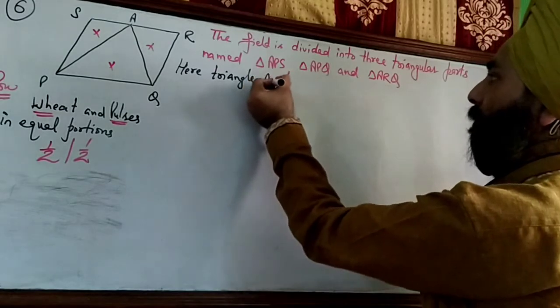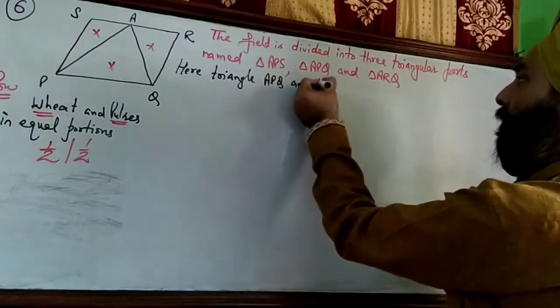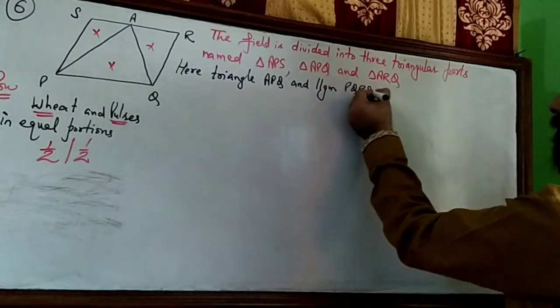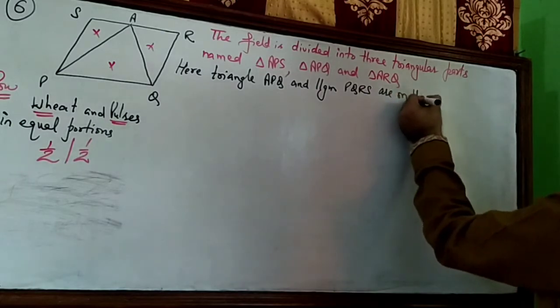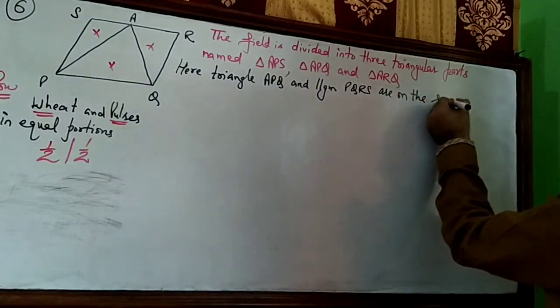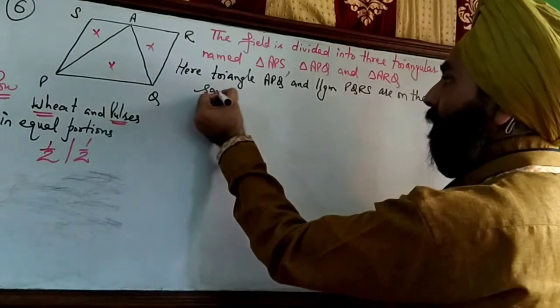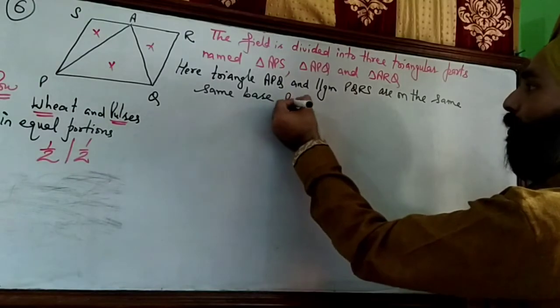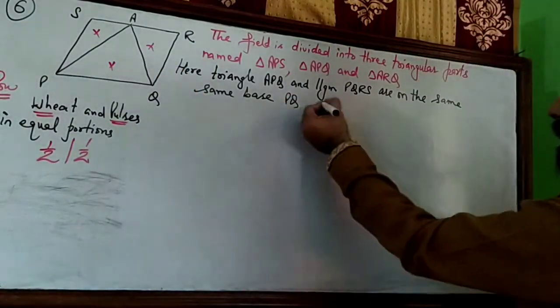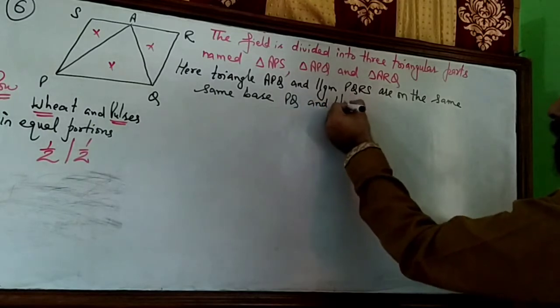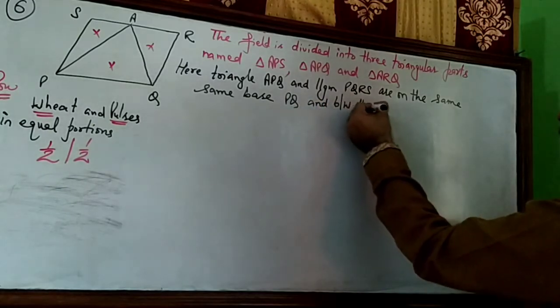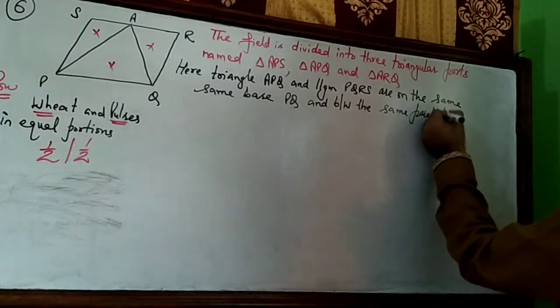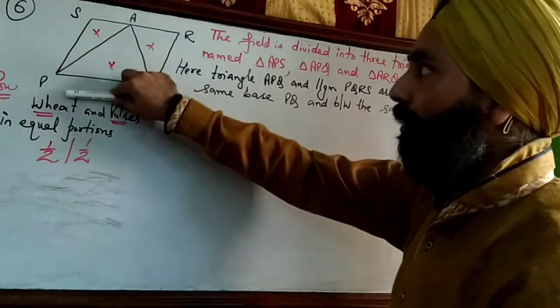Triangle APQ and parallelogram PQRS are on the same base. Base is PQ, this is the same base. And between the same parallels - parallels are PQ and SR.